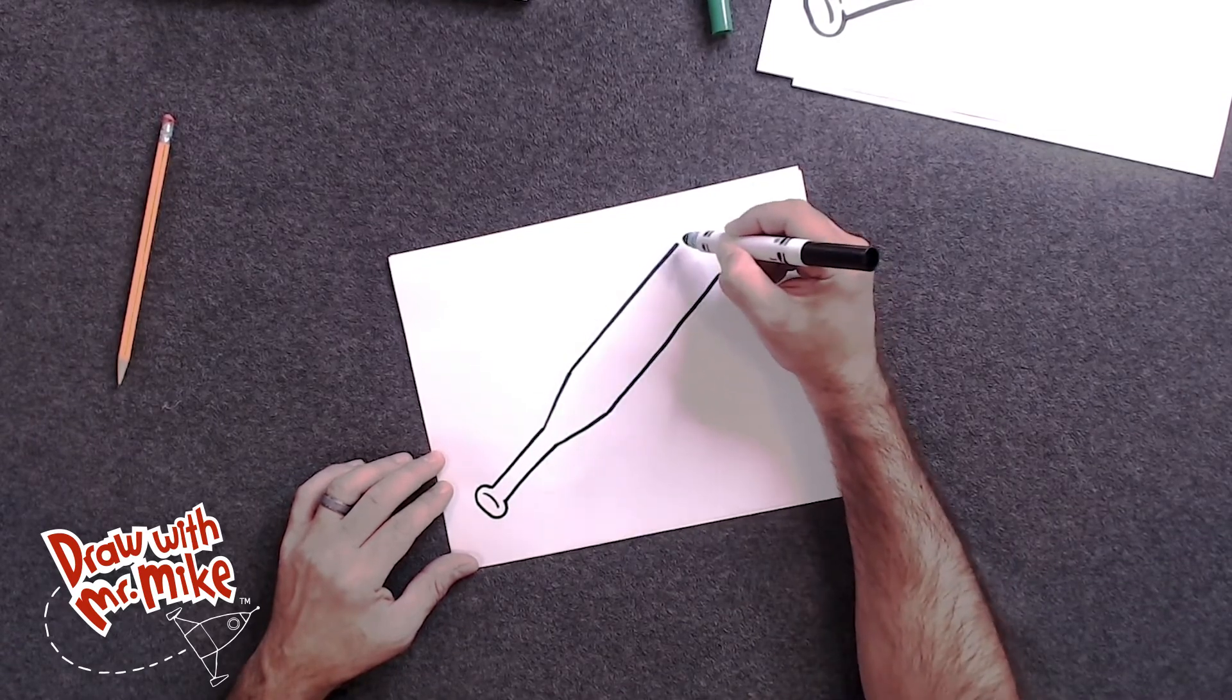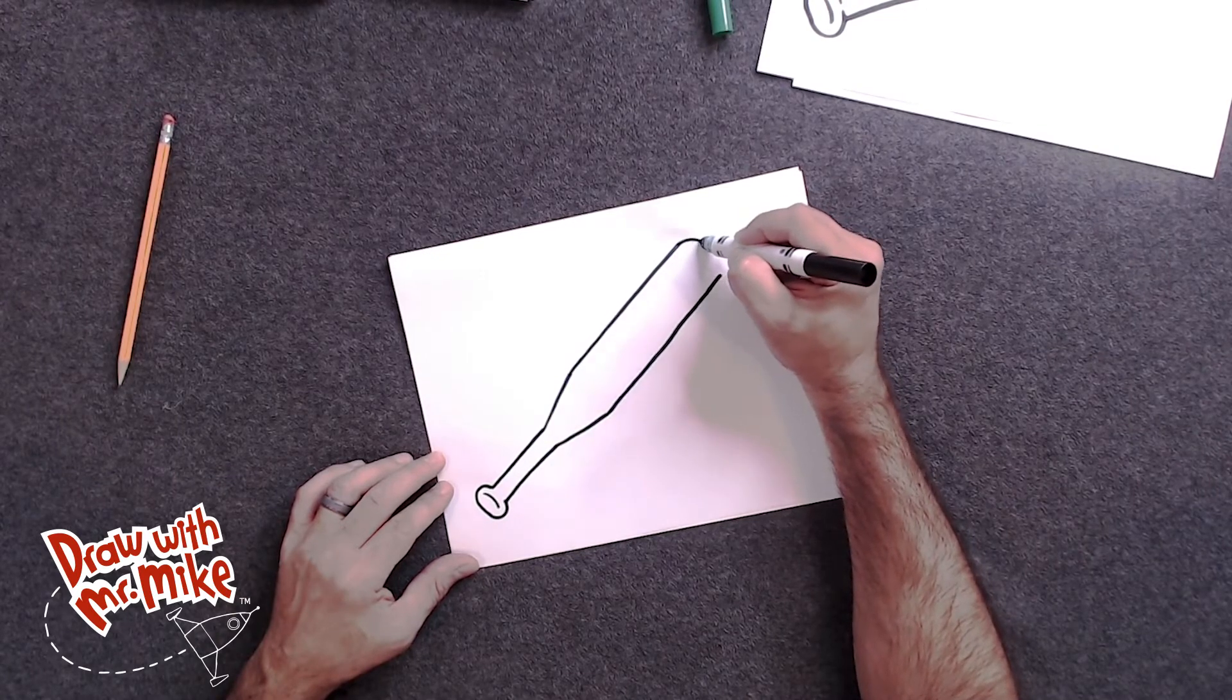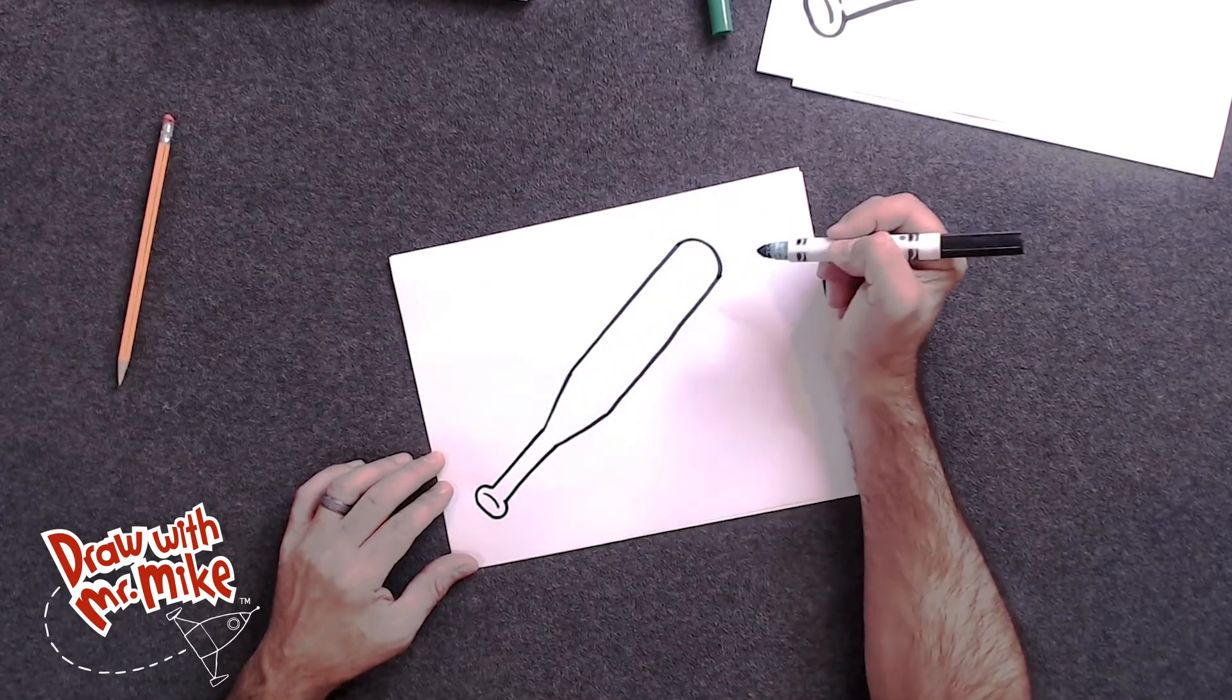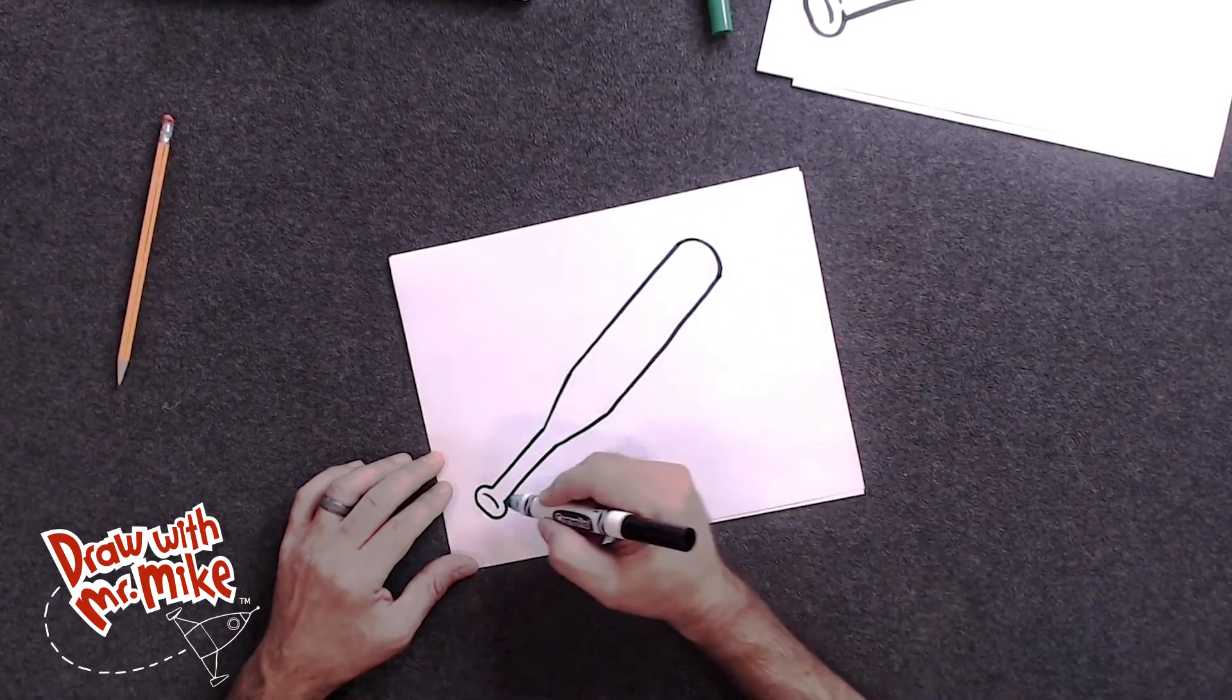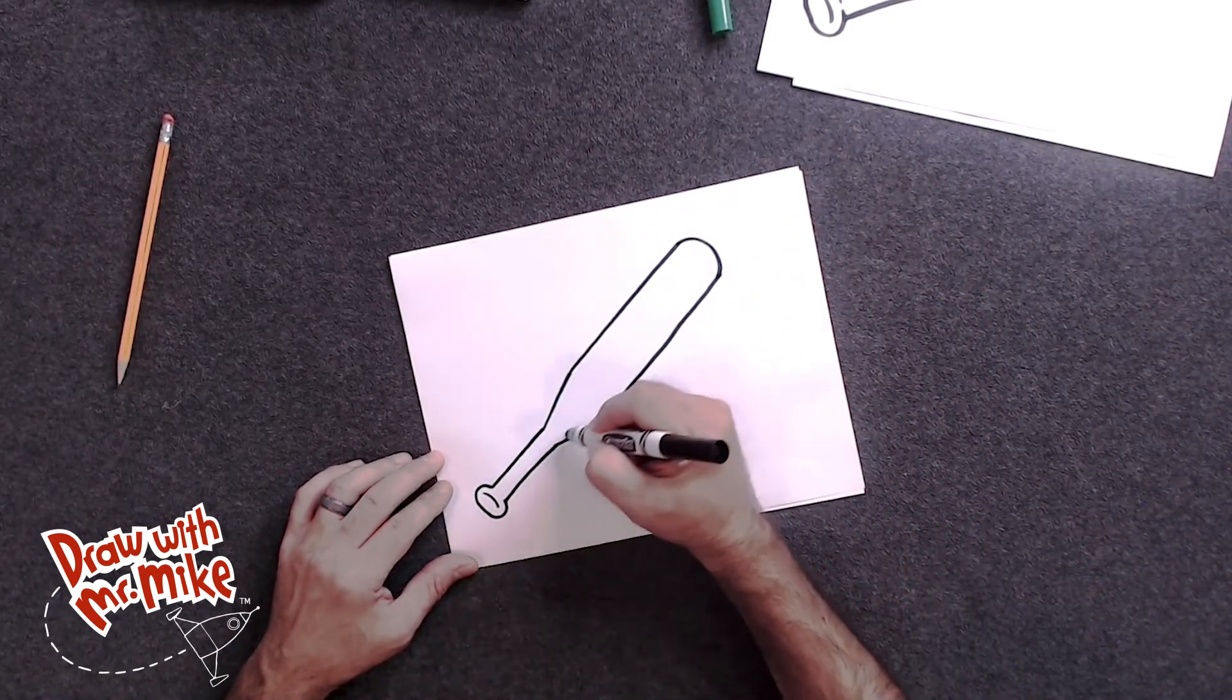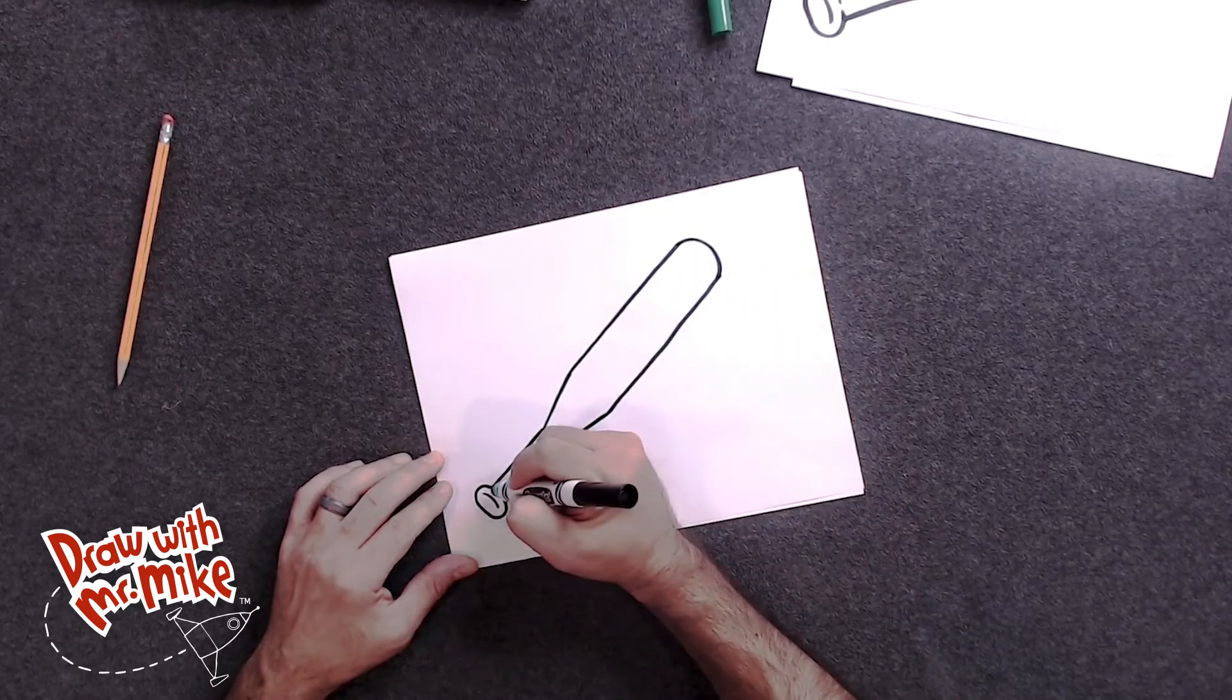So parallel lines. And then at the top, we're going to finish that off with an arc. An arc that goes like that and just joins it together. Okay? And now I'm going to do an outline around all of this, just to join all the lines together and finish this drawing off.